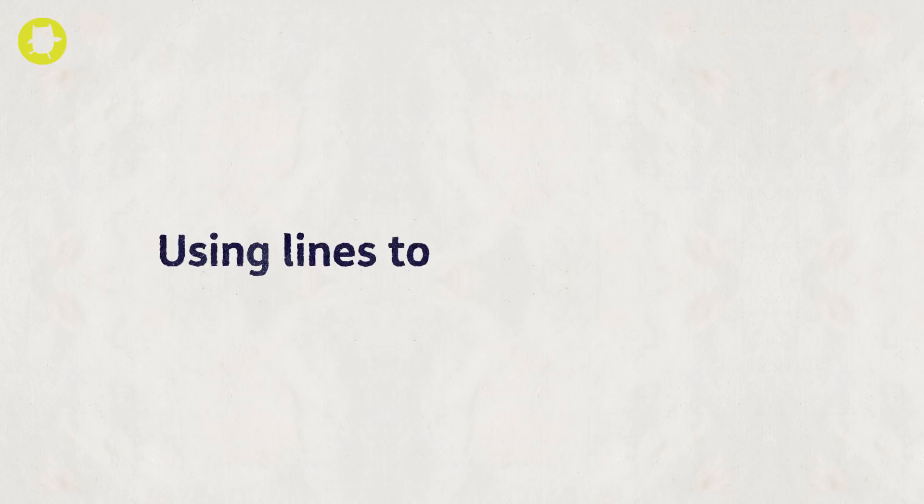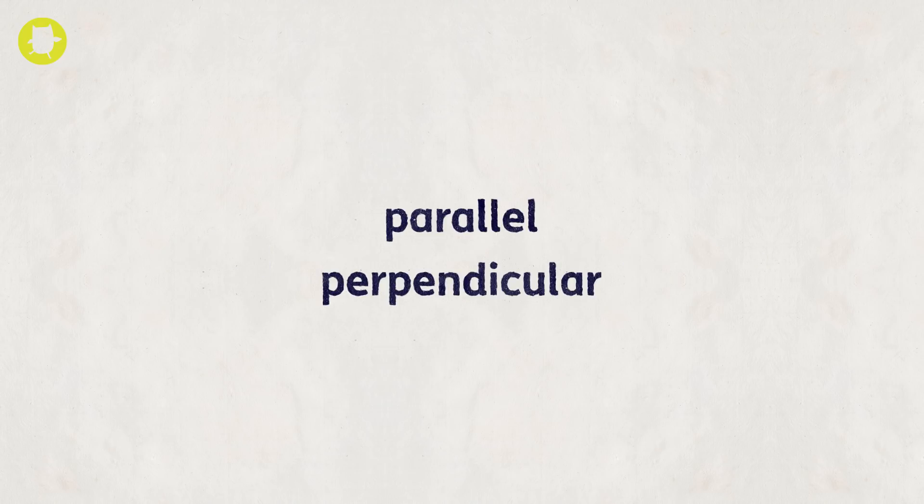One way of describing shapes would be to describe the lines that make up the shape. Lines can be described as parallel or perpendicular.